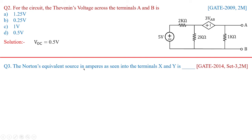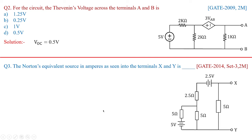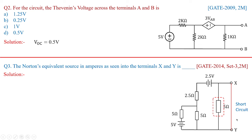The Norton's equivalent source in amperes as seen into the terminals X and Y is asked. This was framed in 2014 under set 3 for 2 marks. In this problem, instead of resistors, rectangle boxes are given but units are in ohms, and there are two voltage sources: 5 volts and 2.5 volts. We need to find only the Norton's equivalent source, which means finding the short circuit current across X and Y. We short the terminals X and Y, making the 5 ohms dummy in nature.